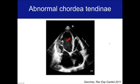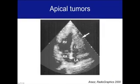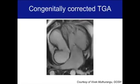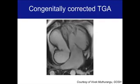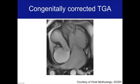Abnormal chordae tendineae, as in this echo example, can be mistaken for trabeculations. An apical thrombus on native echo may mimic non-compaction, and even on cardiac MR this haziness may mimic a non-compacted layer — but it turns out on early gadolinium-enhancing images that this was an apical thrombus. An apical tumor was again mistaken in this case for left ventricular non-compaction. A very interesting case of congenitally corrected transposition of the great arteries shows that this ventricle looks like it's non-compacted but in fact it's just CCTGA.